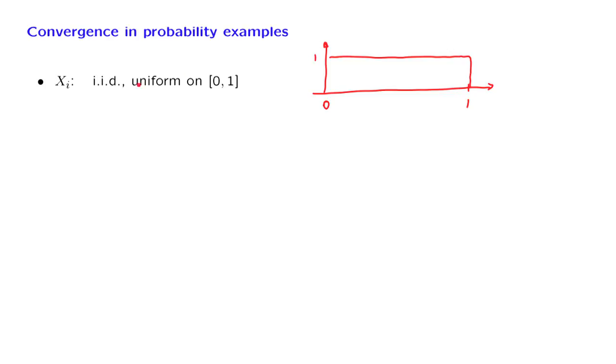Are these random variables convergent to something? The answer is no. And the reason is that as i increases, the distribution does not change, and it does not get concentrated around a certain number. The distribution remains spread out over the entire unit interval.